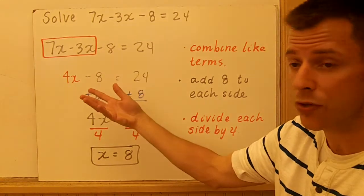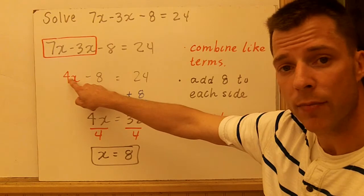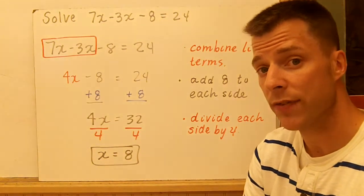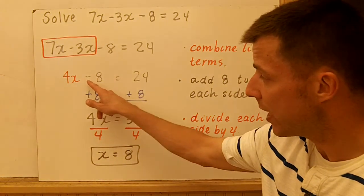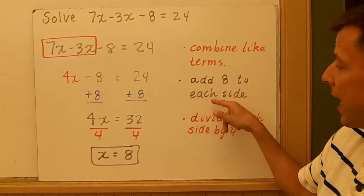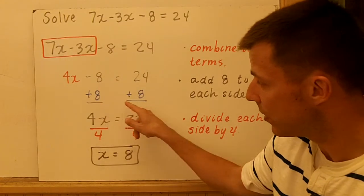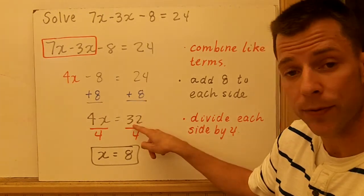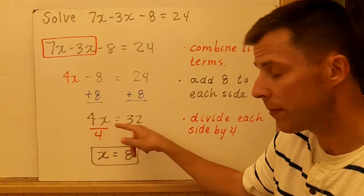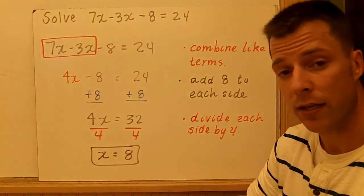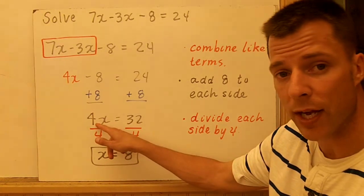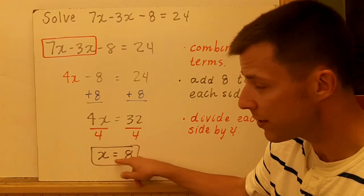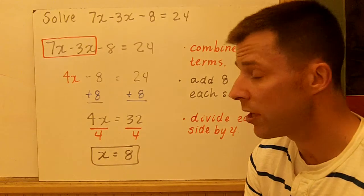This is really a two-step equation because you have two operations: multiplication and subtraction. Again, I'm going to look at multiplication and division last. I have subtracting 8. To undo subtraction, I add 8 to each side. These cancel. You're left with 4x equals 32. Mental math would say 4 times what number is 32? It's 8. Algebraically, we divide each side by 4. Dividing each side by 4 leaves me with x equals 8.